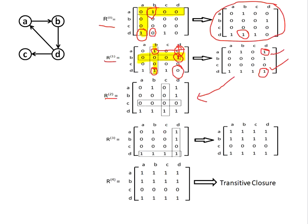For R2, we select the third row and third column. Checking for 1s: there is a 1 at D-C in the column, but all entries in the third row are 0. Since there is no 1 in the row section, we cannot draw any imaginary line. The resultant matrix remains unchanged and carries forward as R3.